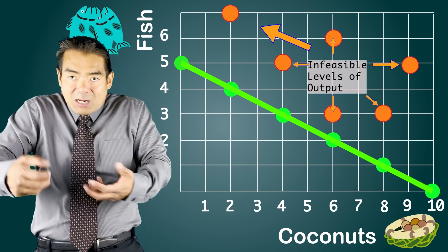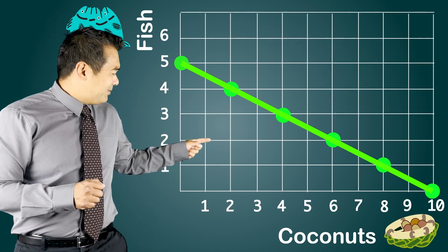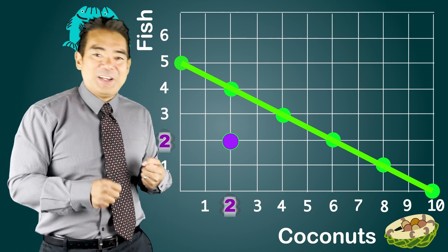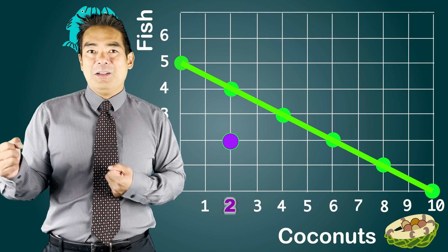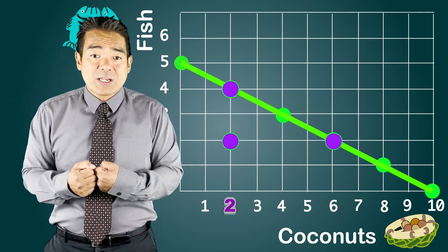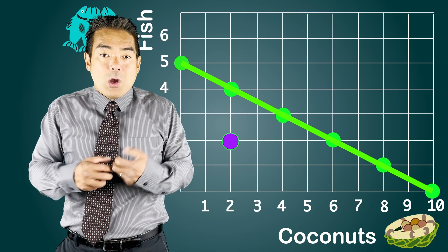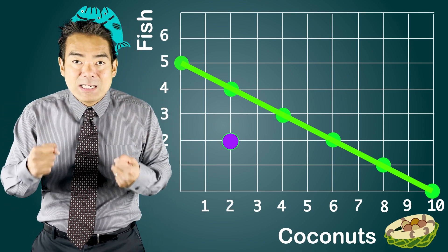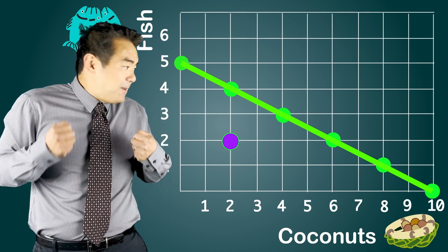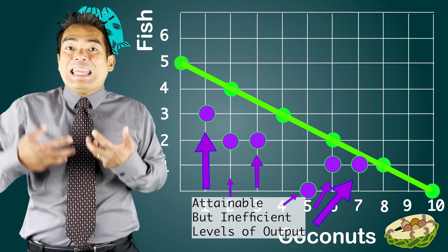There are some levels of output an economy is not capable of producing because of the available factors of production. What about a point inside the PPC? It's definitely possible to produce two fish and two coconuts, but what's the problem? If I'm only catching two fish, I should be able to get more than two coconuts. Or if I'm only collecting two coconuts, I should be able to get four fish — I could produce more of both by moving to a point on the curve. Producing two fish and two coconuts means I'm not maximizing the use of my available labor hours.